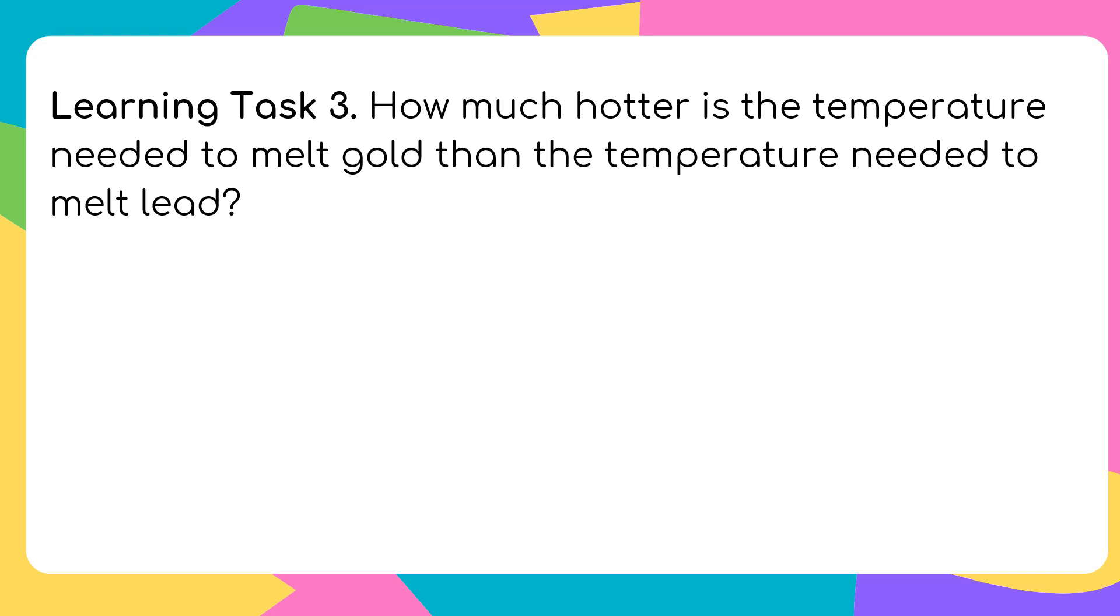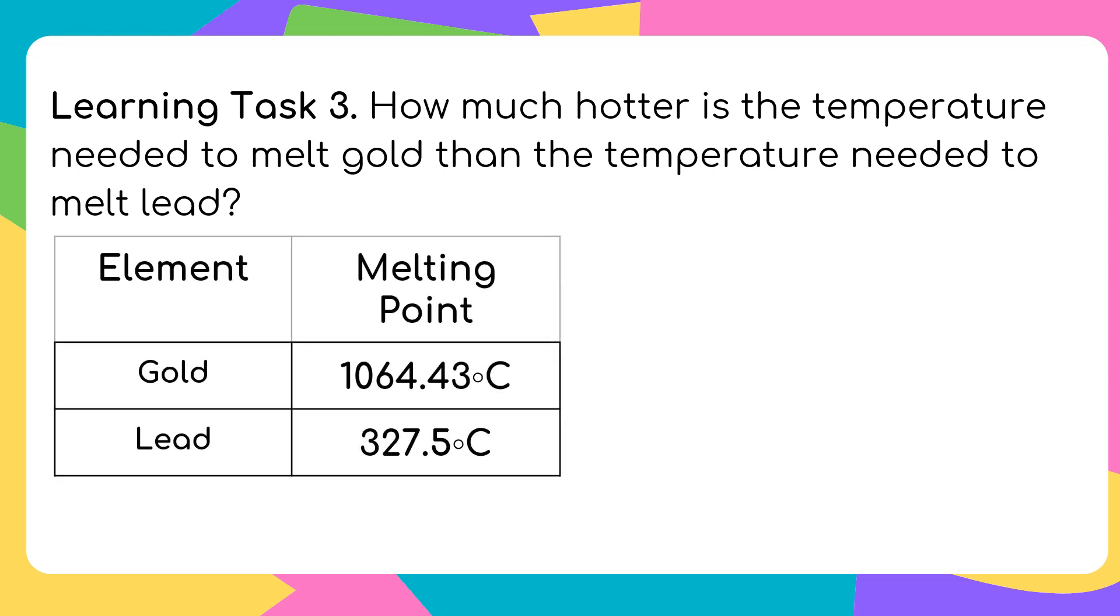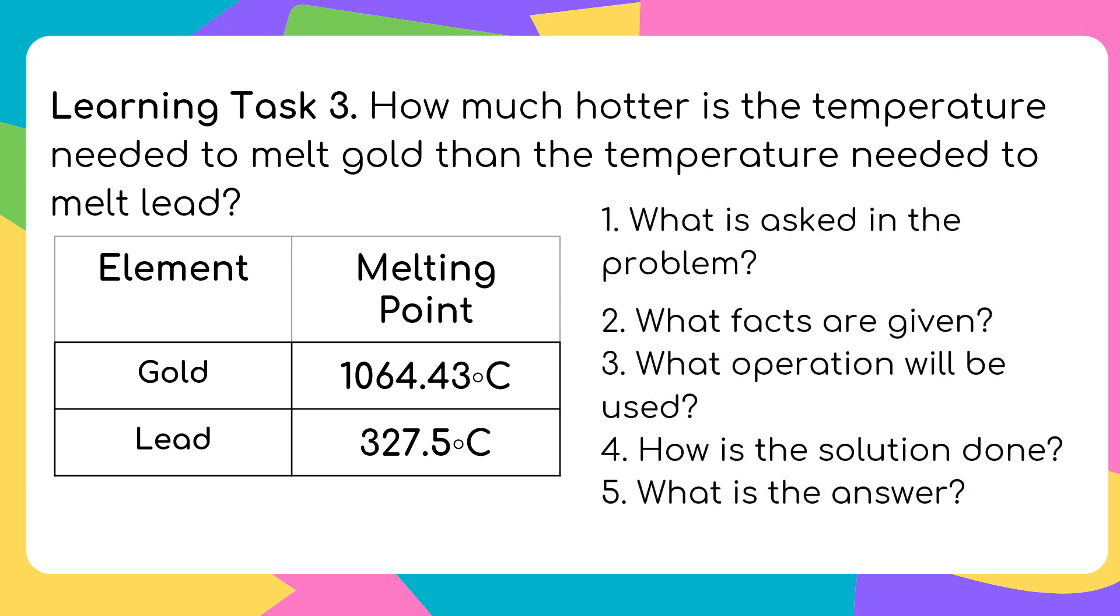Sagutin natin itong kanon. How much hotter is the temperature needed to melt gold than the temperature needed to melt lead? Here is the table. The element gold and lead. The melting point of gold, which is 1064.43 degrees Celsius. The lead is 327.5 degrees Celsius. What is asked in the problem? How much hotter is the temperature needed to melt gold than the temperature needed to melt lead? What facts are given? The gold of 1064.43 degrees Celsius and the lead of 327.5 degrees Celsius. What operation could we use? Subtraction. We will just subtract, parang mag-minus lang natin. How is the solution done? We will subtract. Kopihin lang natin ang unit na degrees Celsius.